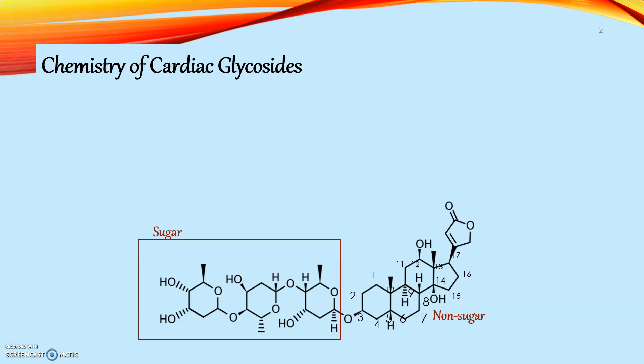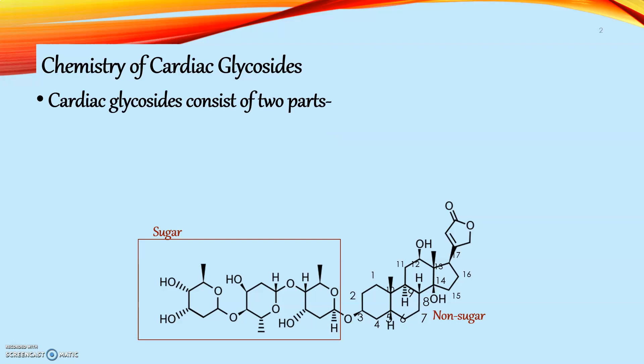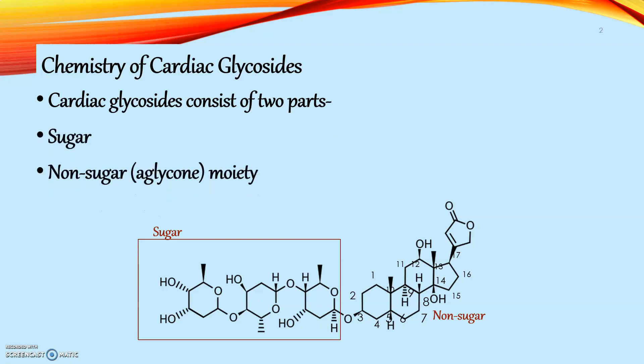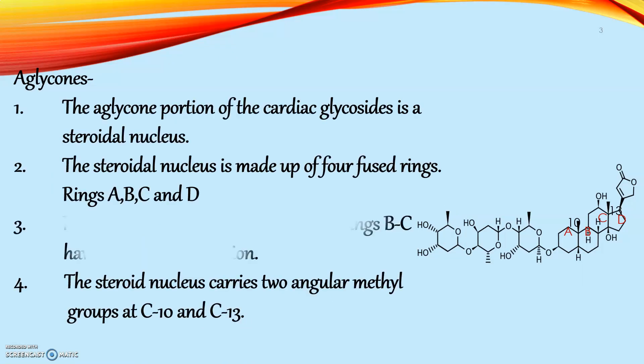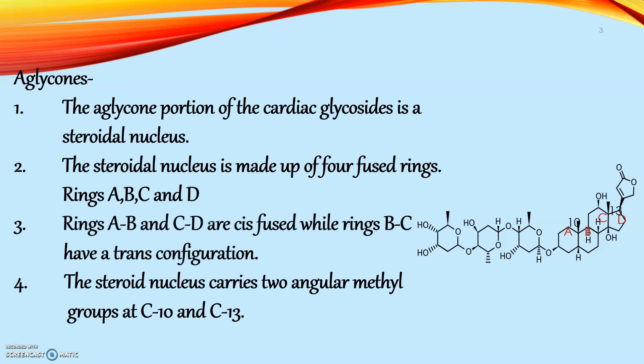Chemically, Cardiac Glycosides consist of two parts: sugar and non-sugar. The sugar part is known as glycon and the non-sugar part is known as the aglycon nucleus.